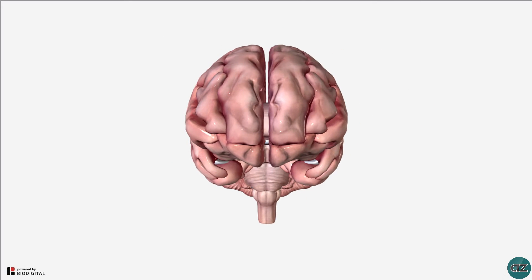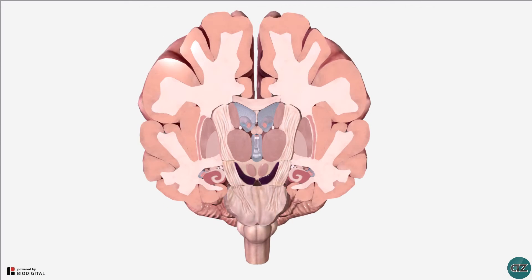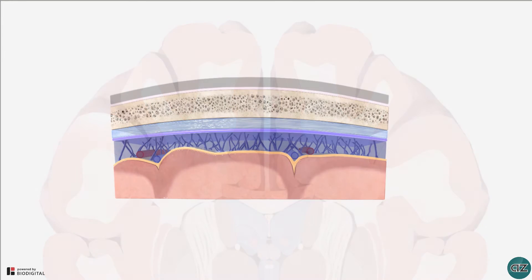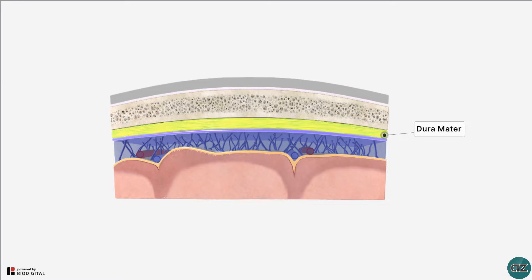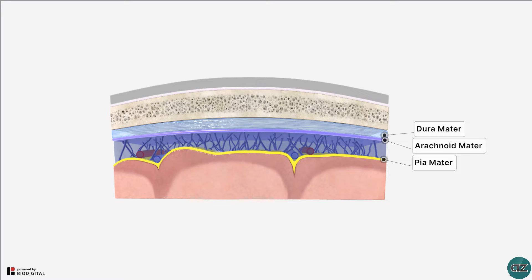Let's take a coronal section of the brain and zoom in to take a closer look at the meninges. The brain is encased by three membranes known as meninges. The tough outer layer is called the dura mater, the second layer is the arachnoid mater, and the innermost layer which adheres to the brain surface and follows its gyri and sulci is the pia mater.